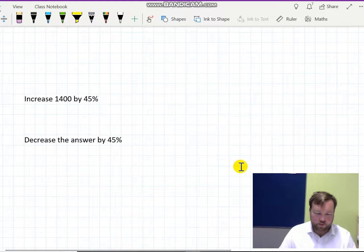I've got the answer there for you. So I'd like to dispel a fallacy that plenty of students have in that if you increase something by 45% and then decrease it by 45%, you end up back at the same place.